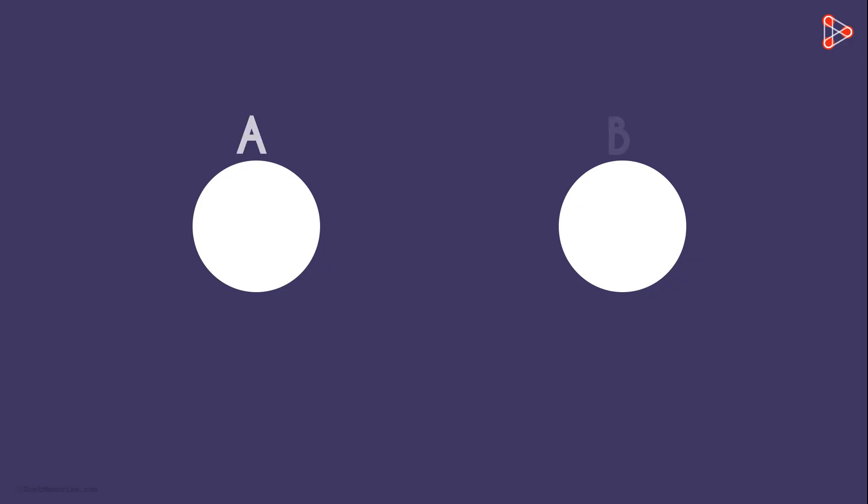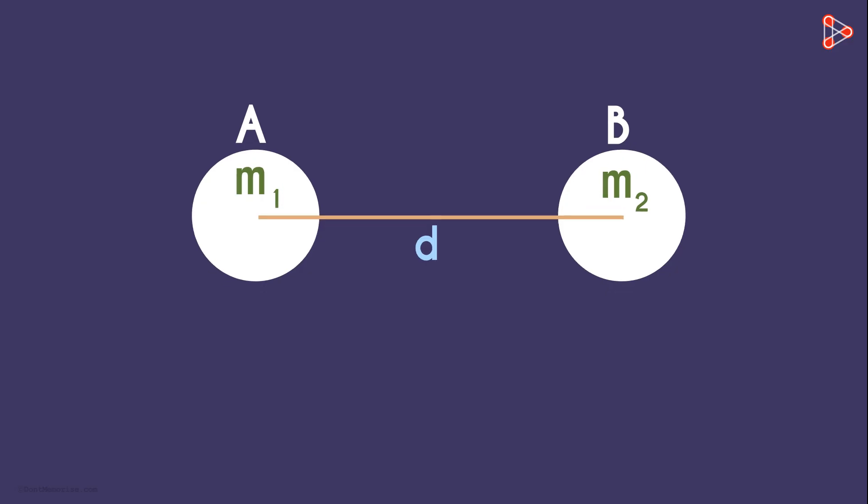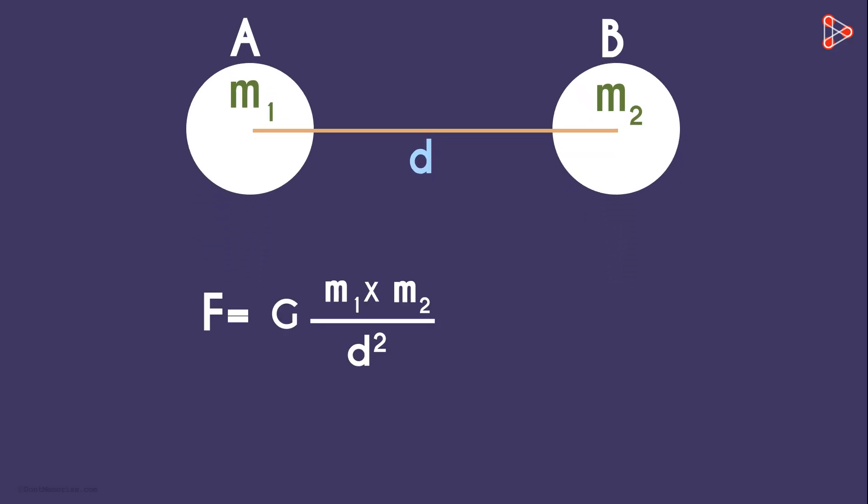If there are two objects A and B with masses m1 and m2, separated by a distance d, then the gravitational force between them is given by this formula.